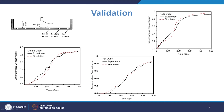Validation involves comparing experimental results with simulation results. There is generally some matching and mismatching, but for the near and middle outlets, there is good agreement in the starting point and intermediate values, confirming the mathematical model captures the intermixing behavior well.